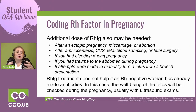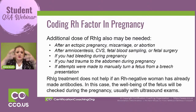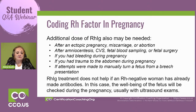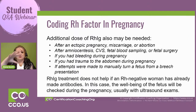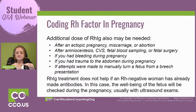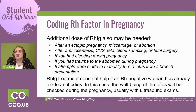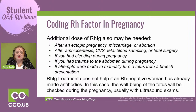Any type of fall would warrant it, because that baby is sitting in a bowl of liquid and could experience minute bleeding from impact. Also, if there was any attempt to flip a breech baby — sometimes they tilt you with your feet up and head down and manipulate the baby to flip — that would also indicate the need. They usually give a shot before 28 weeks and again right before the baby is born.